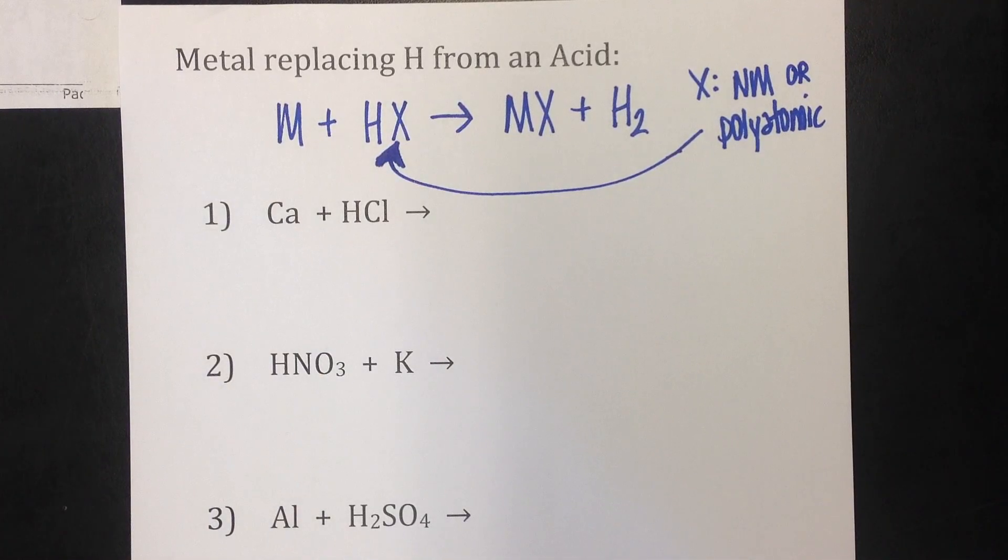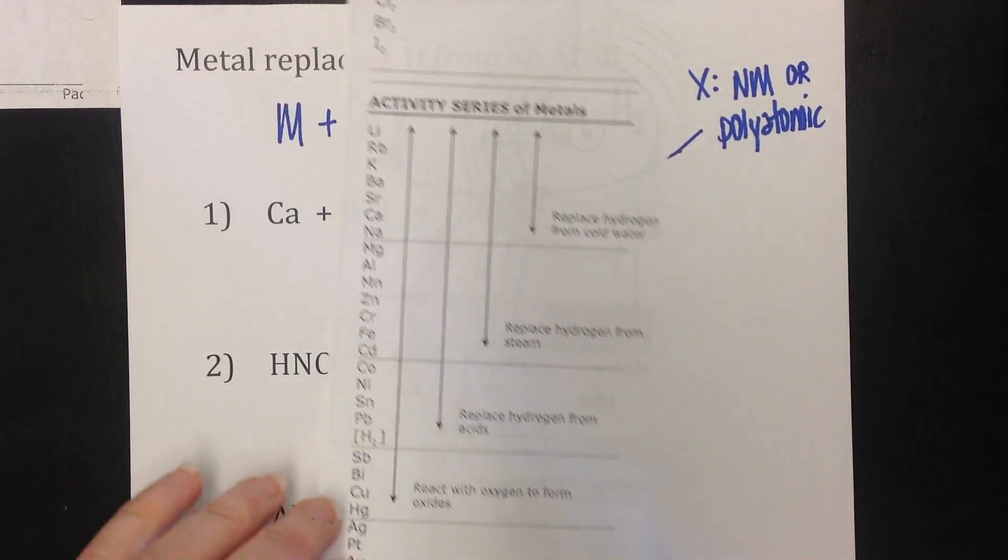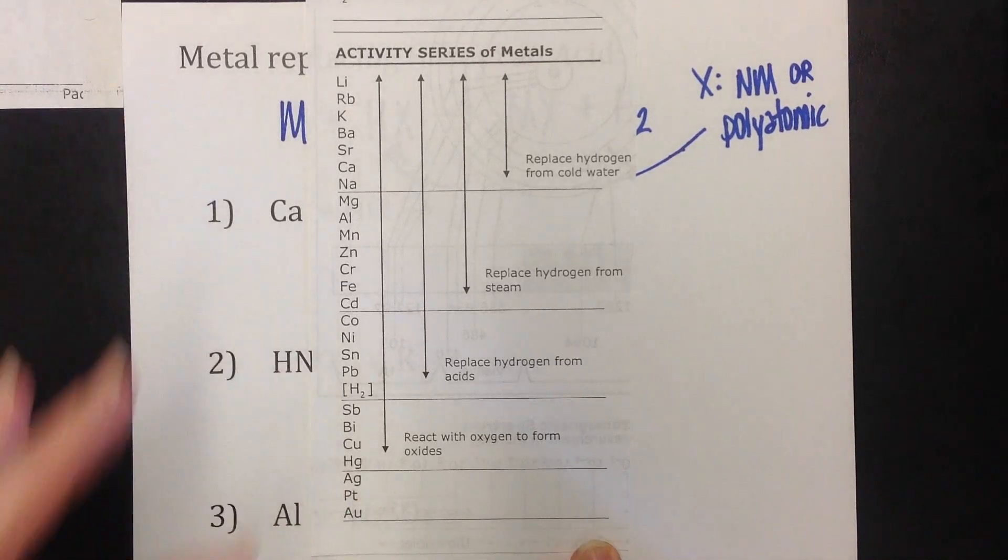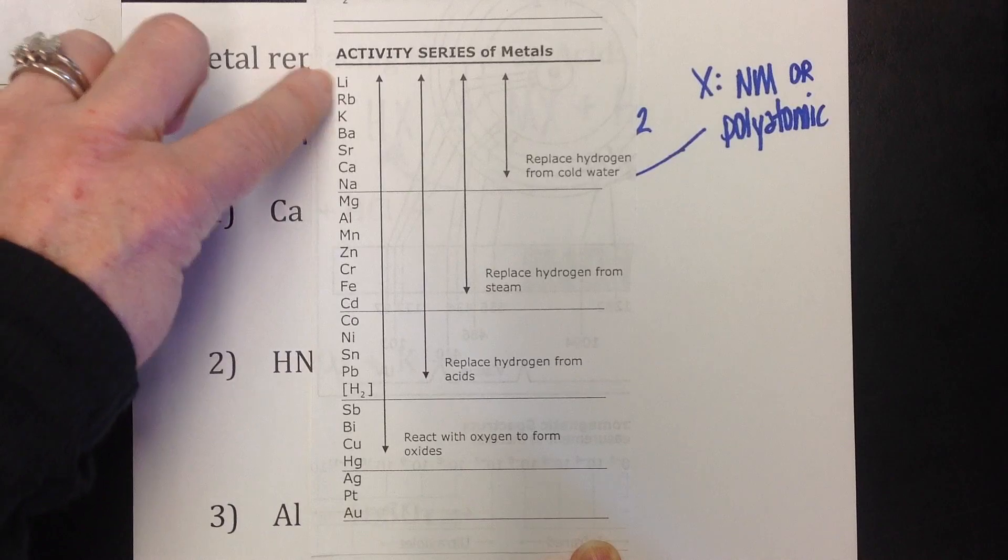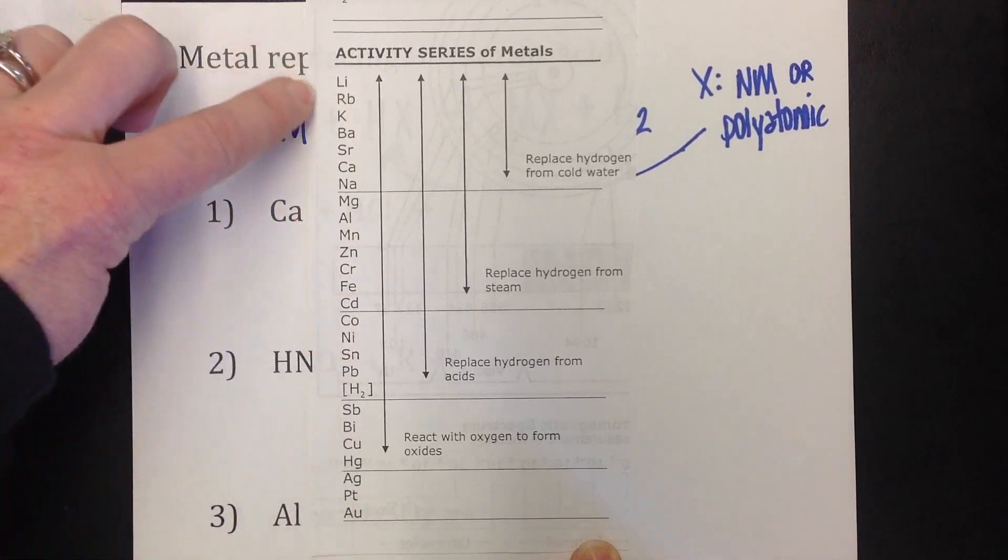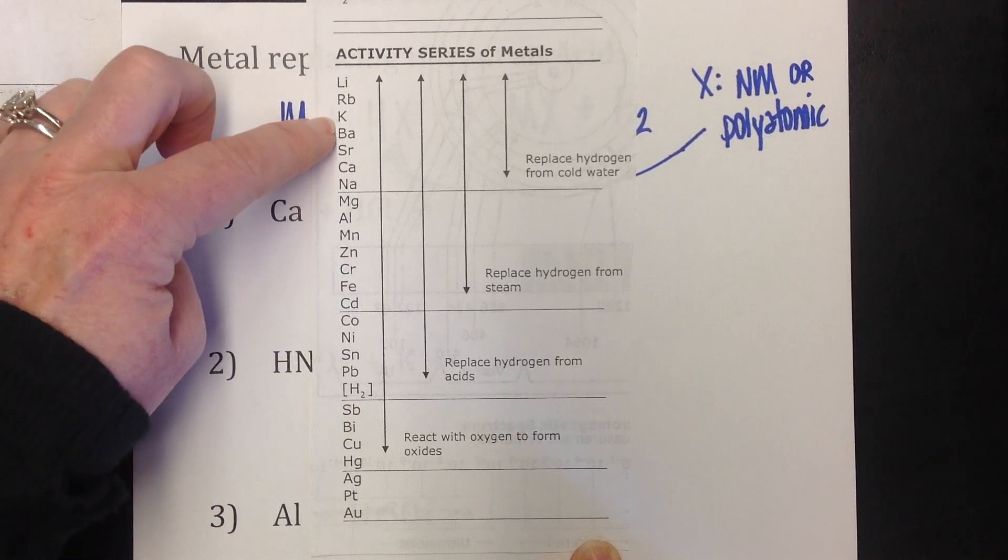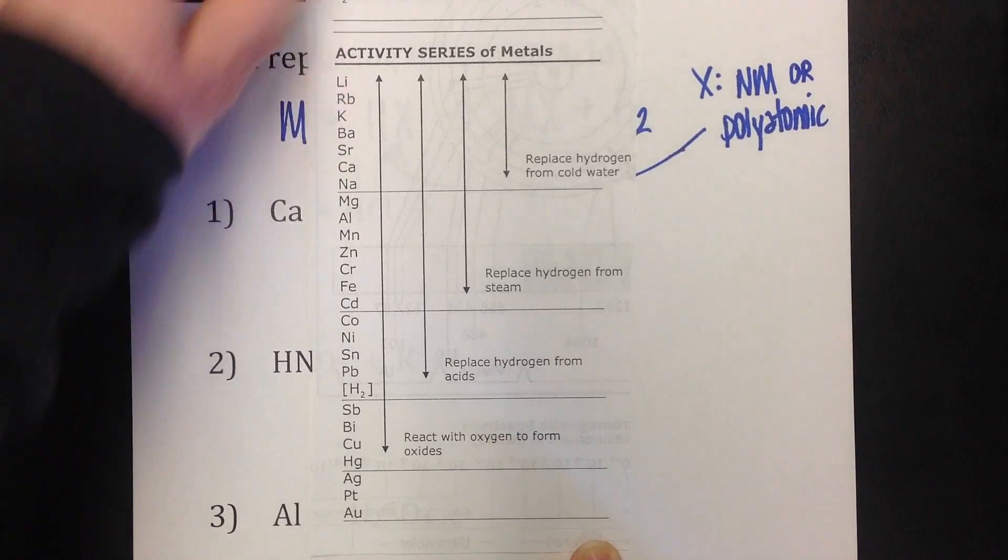Now with these you're going to need your activity series. And I've just cut this out of the reference table packet to put here because if you'll recall, the activity series tells us for metals, like lithium can kick anything below it out of the way. Potassium can kick anything under it out of a compound, but it can't kick out anything above it.